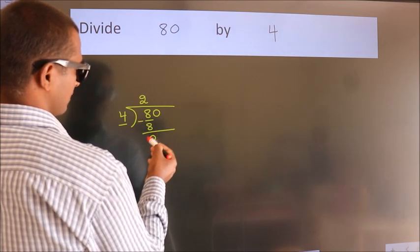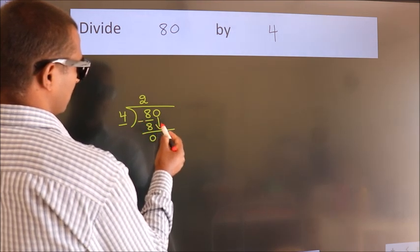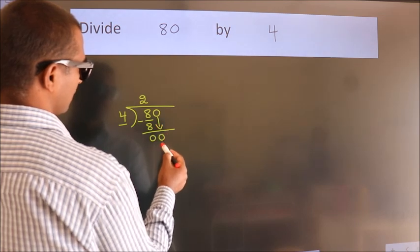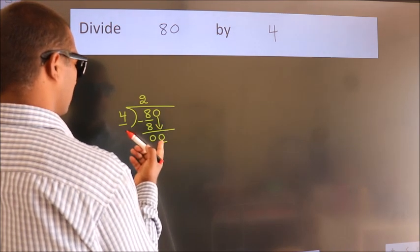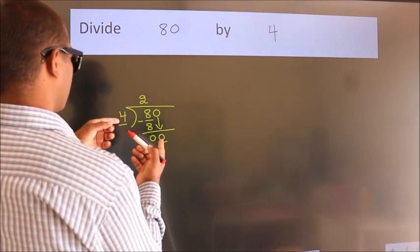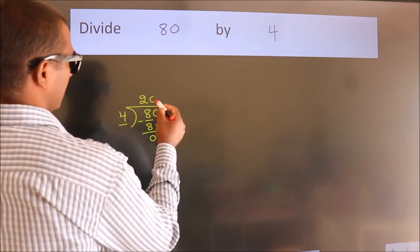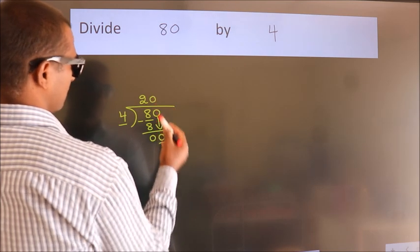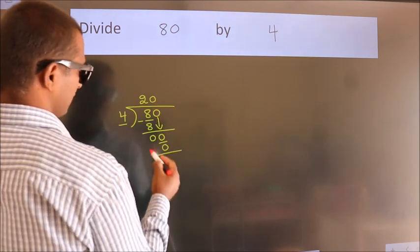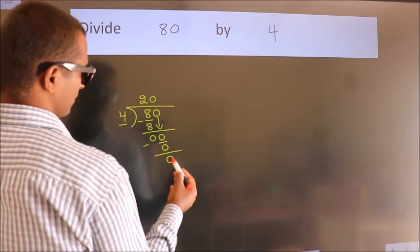After this, bring down the beside number. So 0 down, so 0. When do we get 0 in the 4 table? 4 times 0, 0. Now we subtract. We get 0.